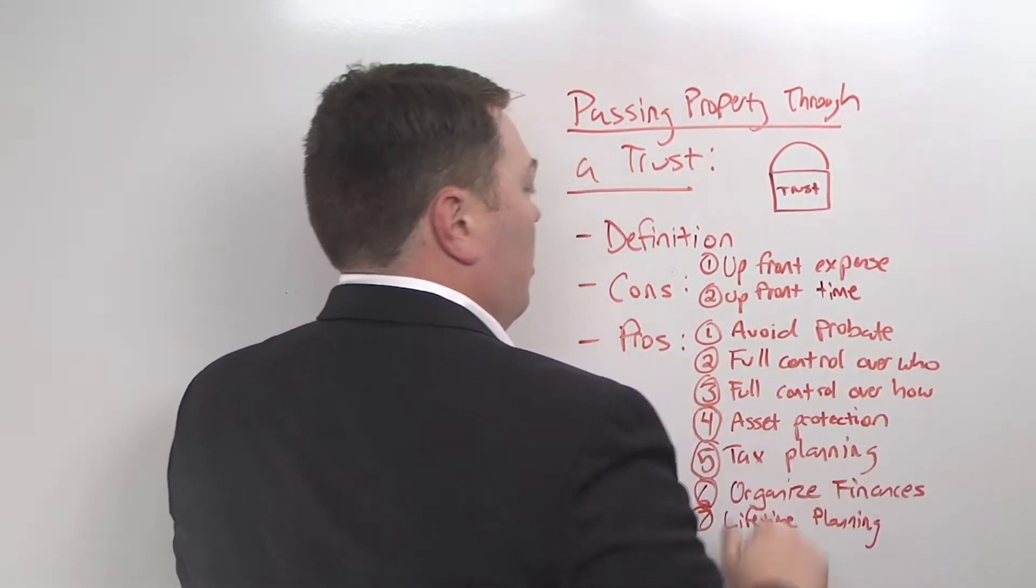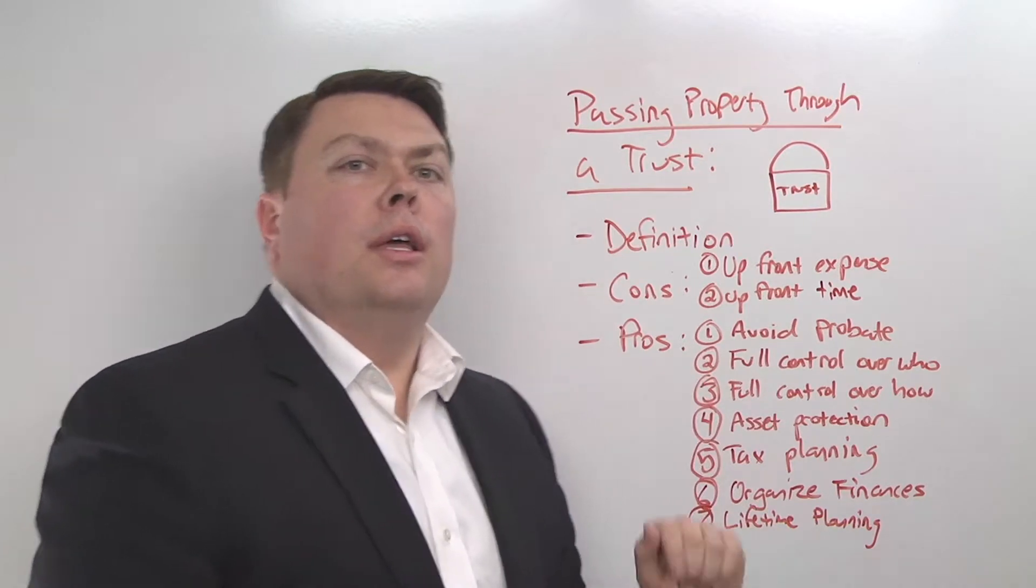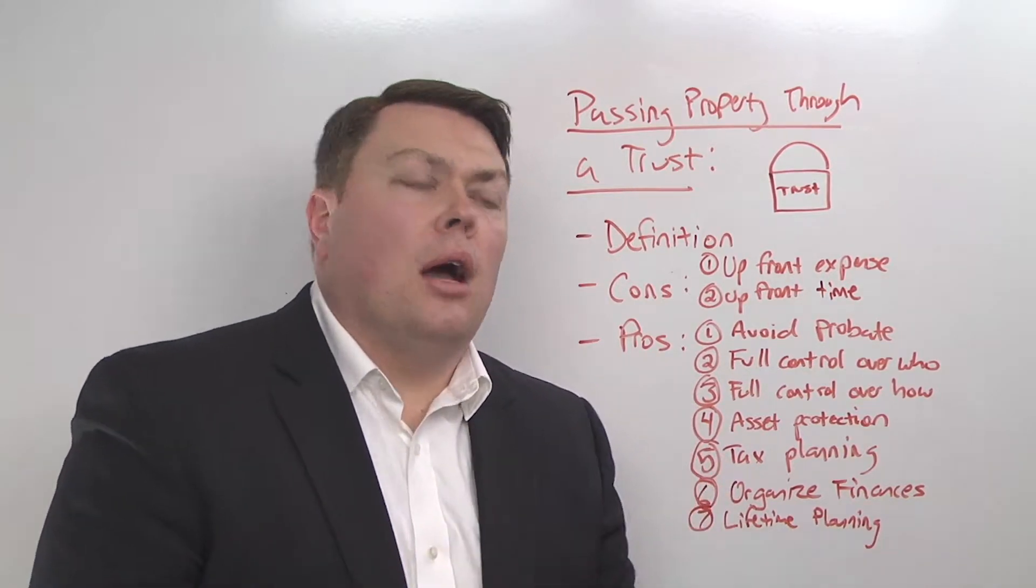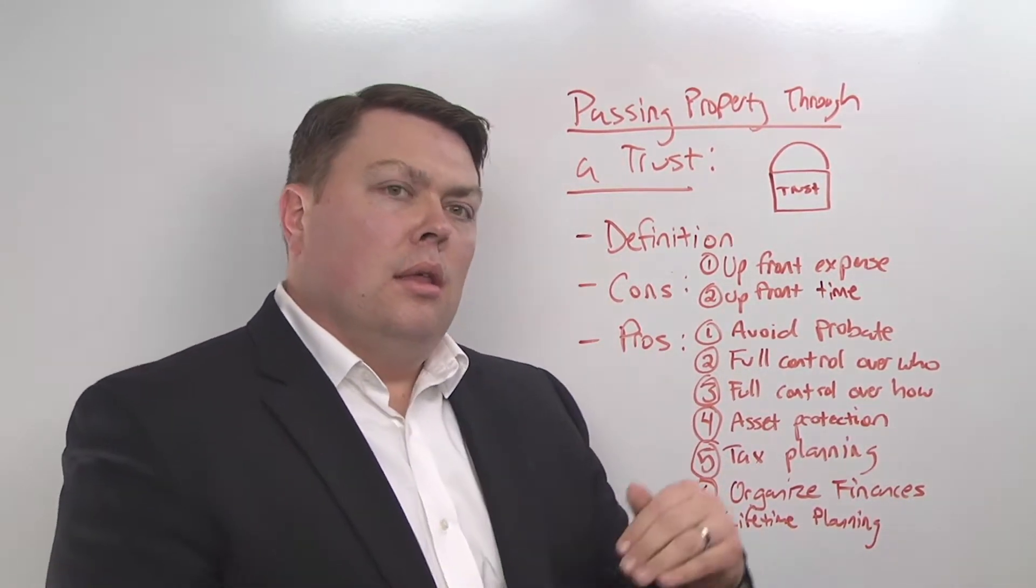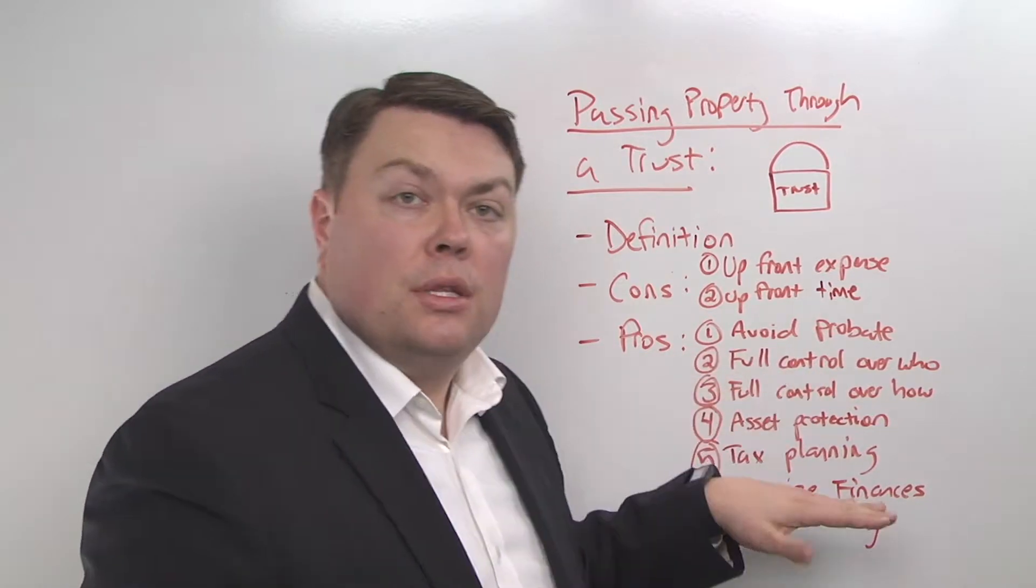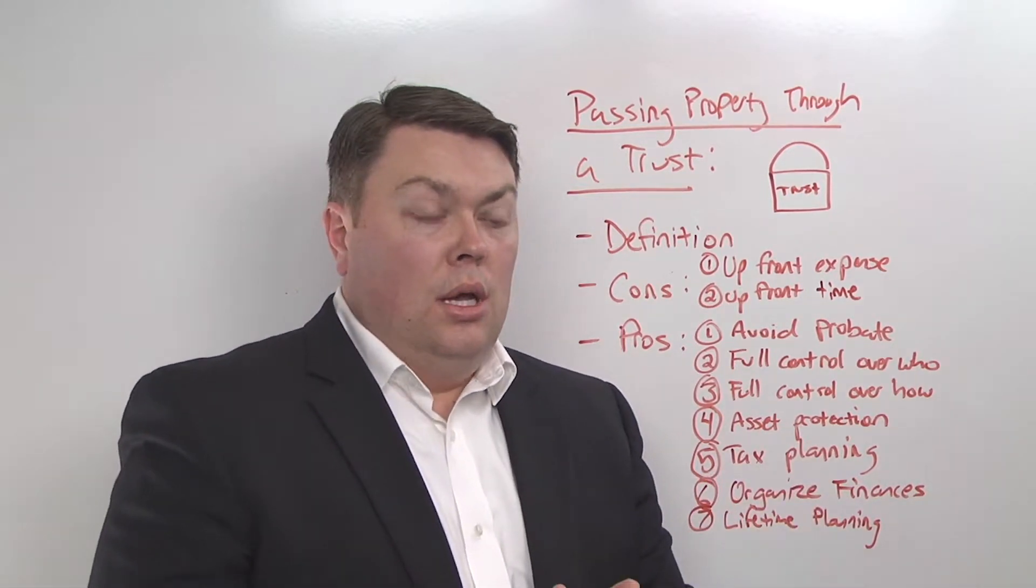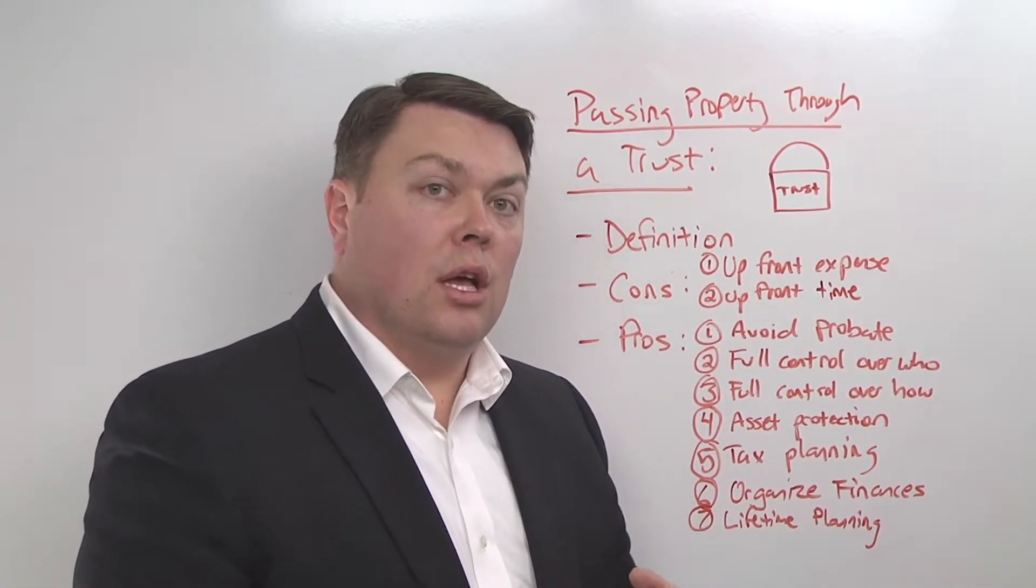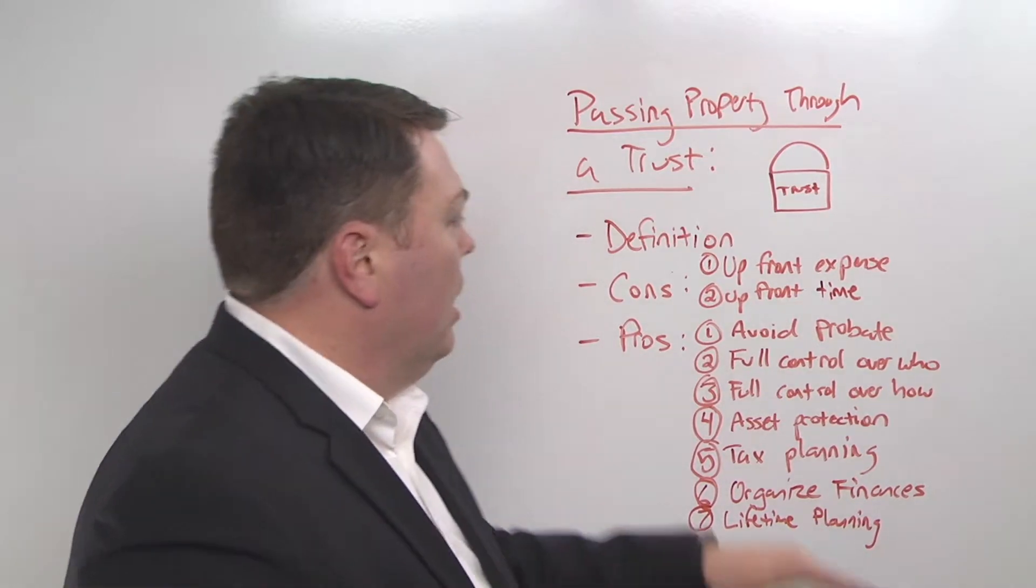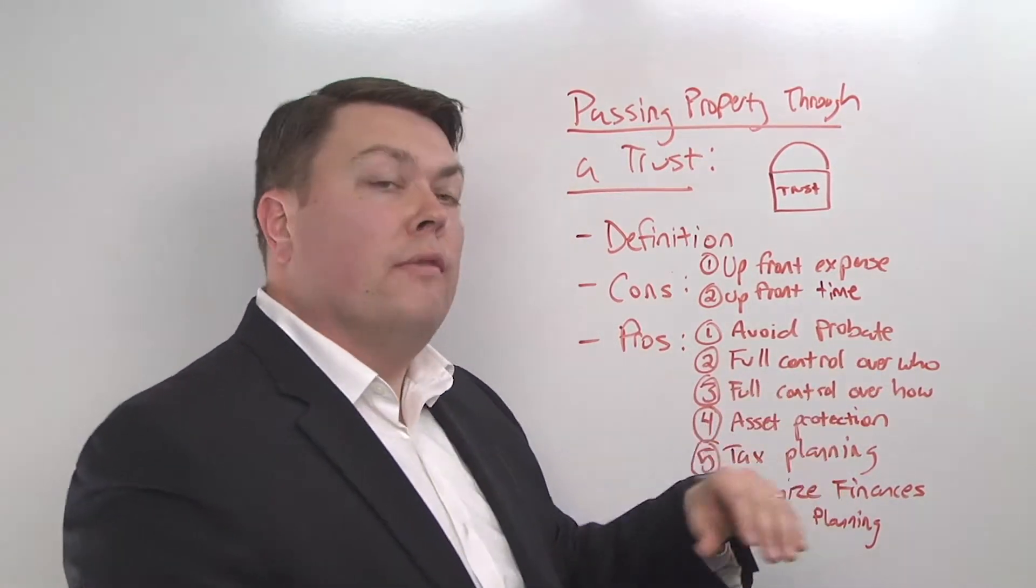Another good thing about the trust is that you have full control over who gets the property. If you remember from weeks past, we talked about maybe with passing property by contract there were some constraints because the custodian of those financial agreements were in charge of the terms, and so we couldn't really control who got the property. We could do beneficiary designations to do a somewhat good job, but we couldn't do contingencies and things like that the way we really wanted to. Here you're in full control over the terms of this trust, which means you're in full control over who gets the property.